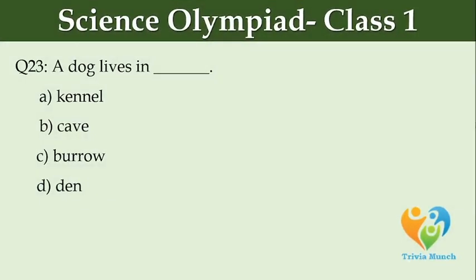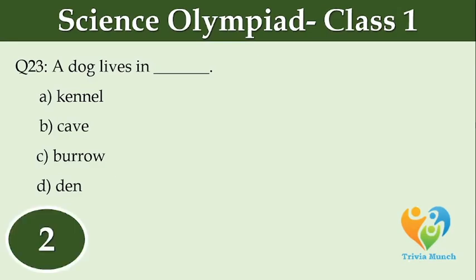A dog lives in dash. Option A: Kennel. Option B: Cave. Option C: Burrow. Option D: Den.